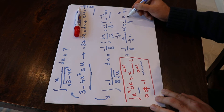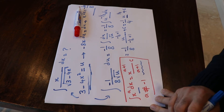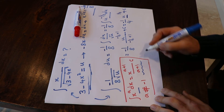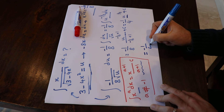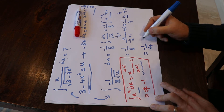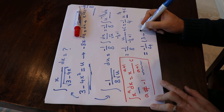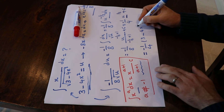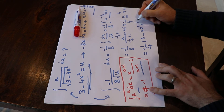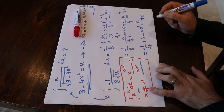At this stage, you need to substitute the value of u back using the definition from the beginning, which gives minus 1/4 times (3 minus 4x²) to the power of 1/2, plus C.